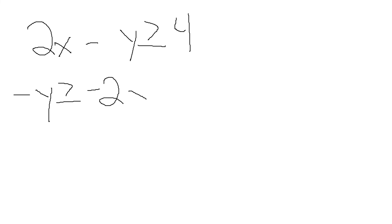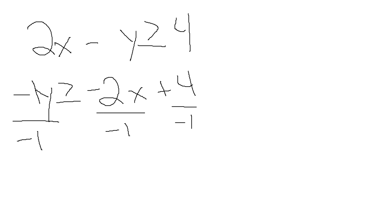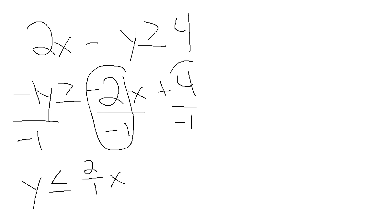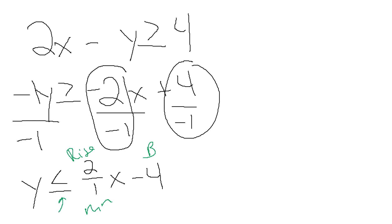I'm going to move my 2X over. Because I need it in Y equals MX plus B, I'm going to write my X term first. My understood plus becomes a minus. Now I have to get rid of my negative understood one, so I'm going to divide everything by negative one. When I divide by a negative, the direction flips. Negative 2 over negative 1 becomes a positive — keep it as a fraction for rise over run. 4 minus 1 becomes negative 4. Then I can graph it with my B and my rise over run. I'll need a solid line and color everything beneath the line because it's Y is less than or equal to.